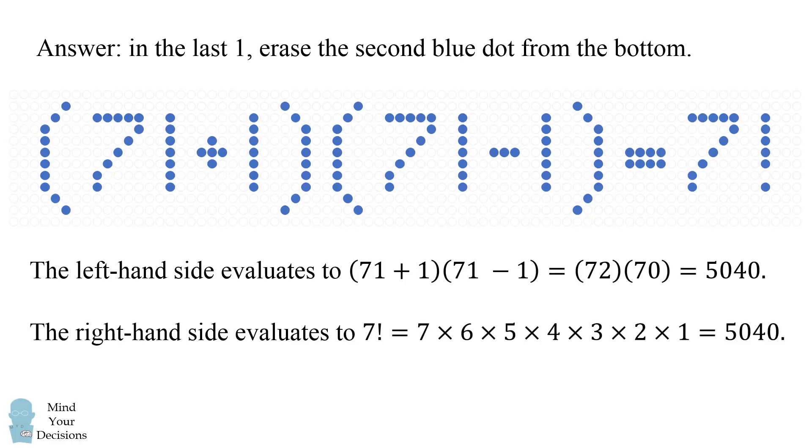The right hand side evaluates to 7 factorial. The 1 becomes an exclamation point which is a factorial. So we take the product of 1 to 7 and we get 5040 and that's how we get a valid equation.